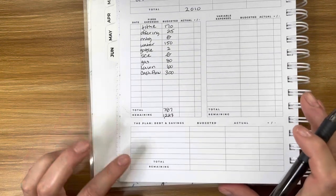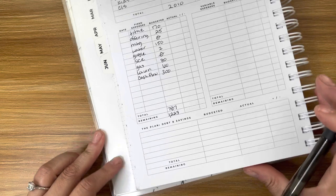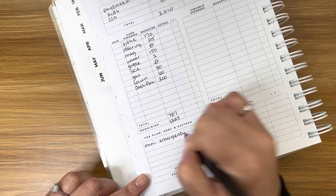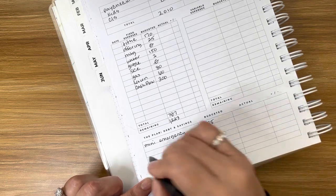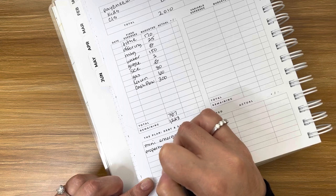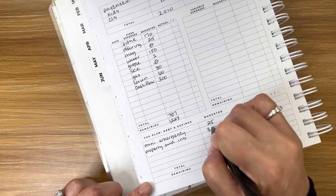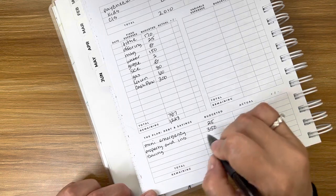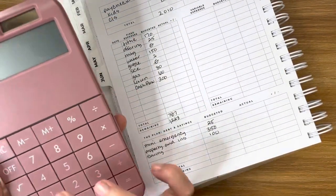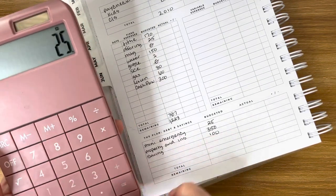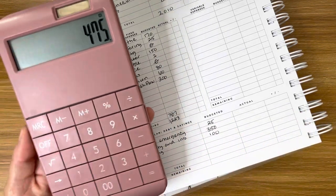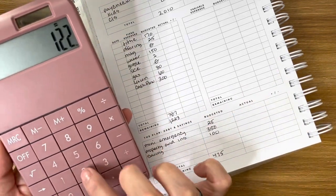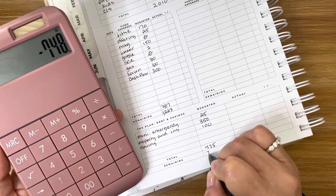And then we're going to come down to savings. Mini emergency sinking fund, we're going to send $25. Property taxes and insurance, we're going to send $350. And then our savings account, that's just to cover annual bills, we're going to send $100. So let's add that up. We've got $25, $350, and $100. That's $475. And let's deduct the remaining amount that we had, $1,223. We have $748.